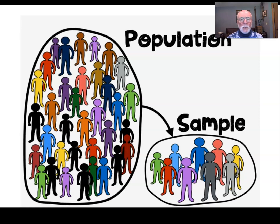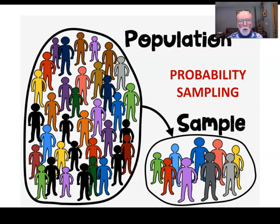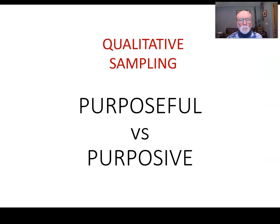The difficulty with qualitative sampling is that the very word 'sample' evokes probability sampling — generalizing from a sample to a population statistically. So using the language of qualitative sampling and distinguishing it from probability sampling raises the question of what to call it.